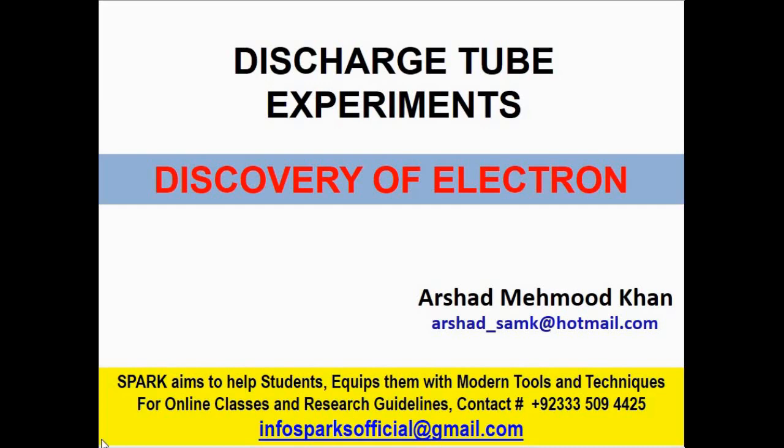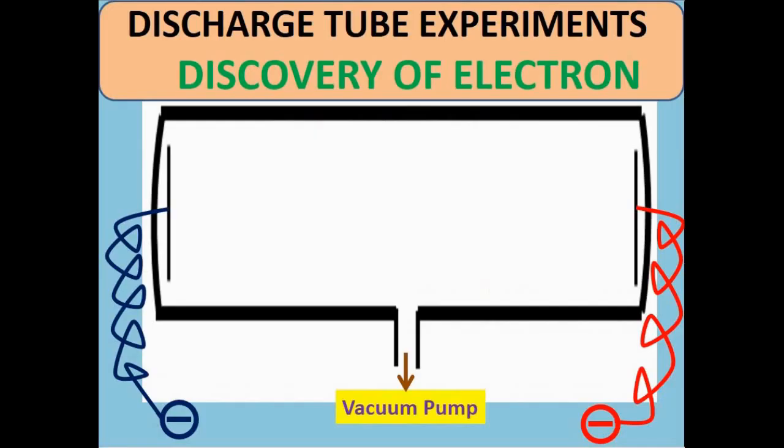He performed several experiments on the gas discharge tube. A simple gas discharge tube consists of two electrodes. These are parallel to each other connected to very high potential difference of 5,000 to 10,000 volts.